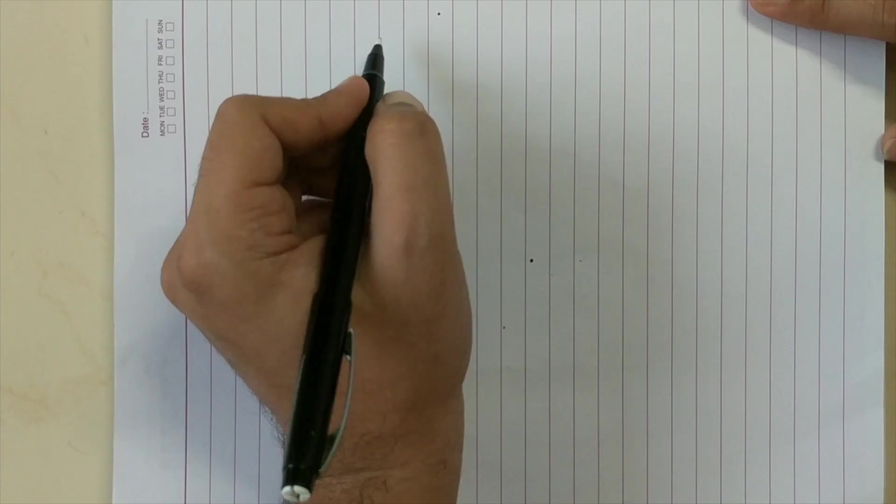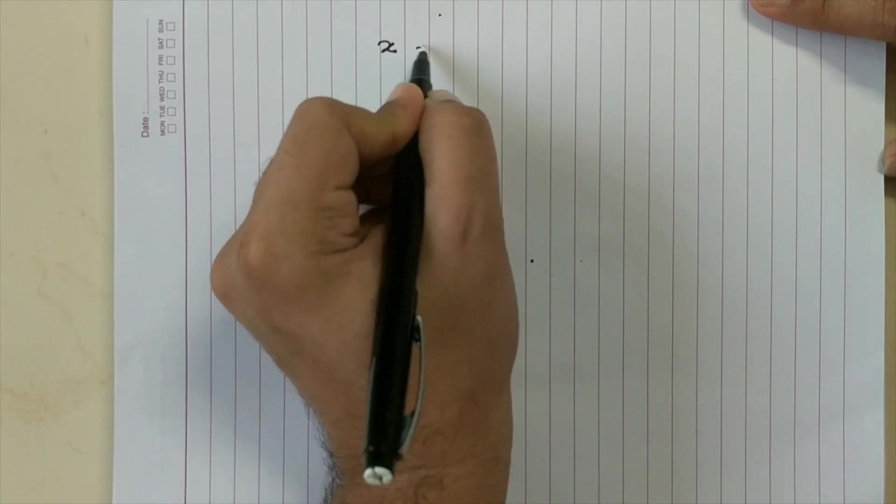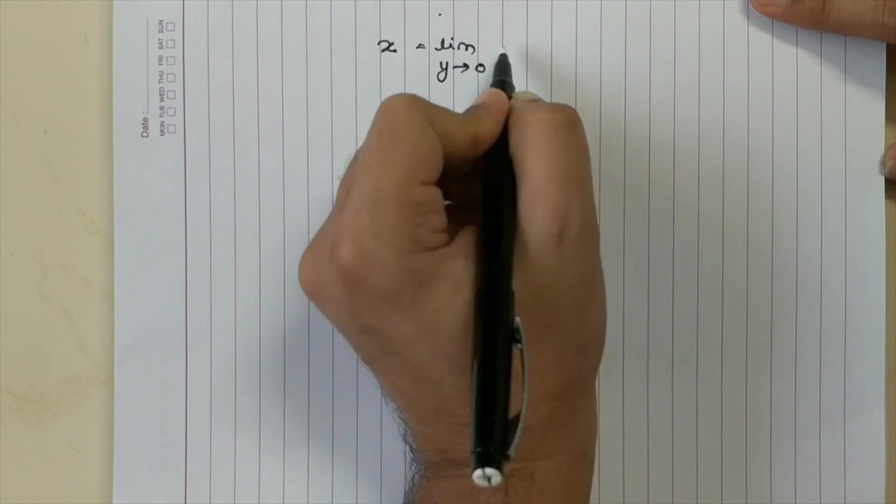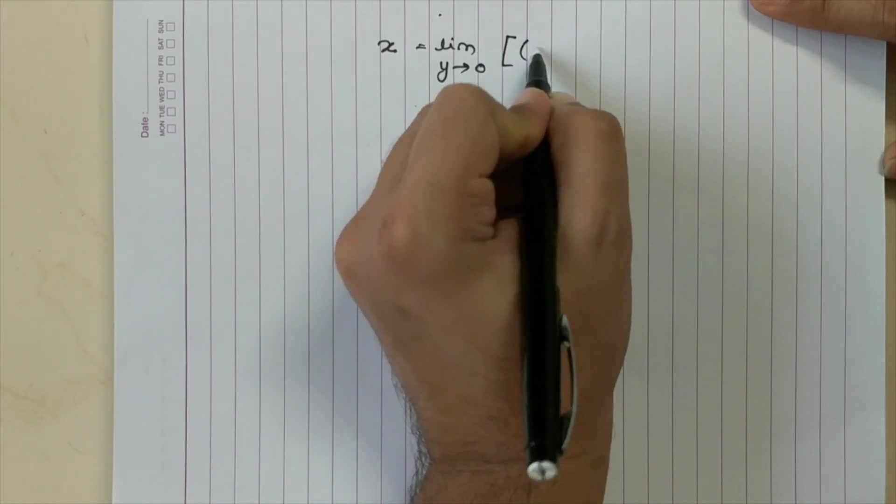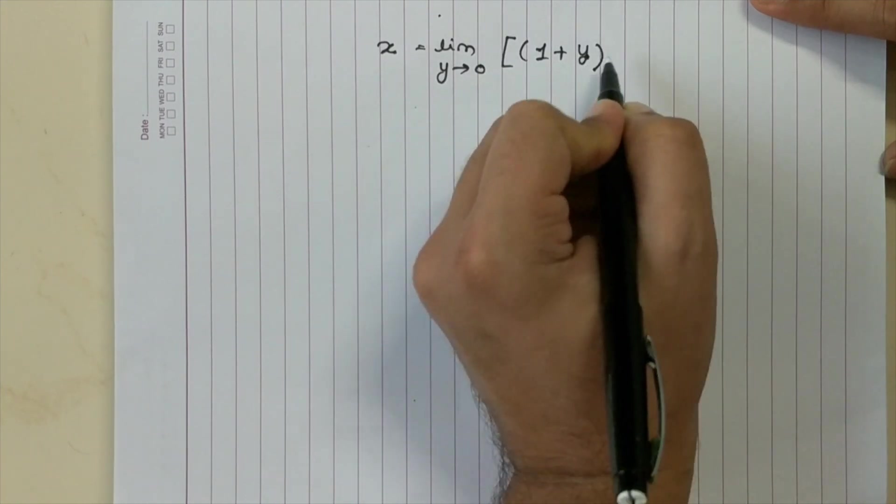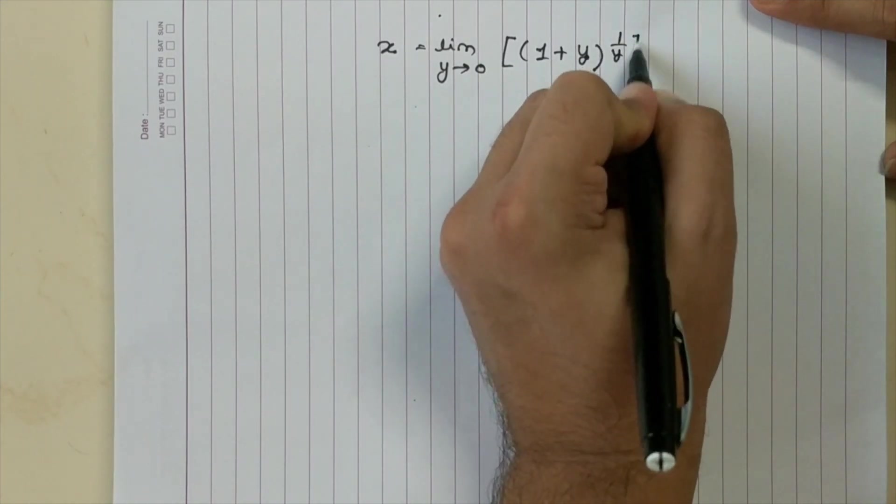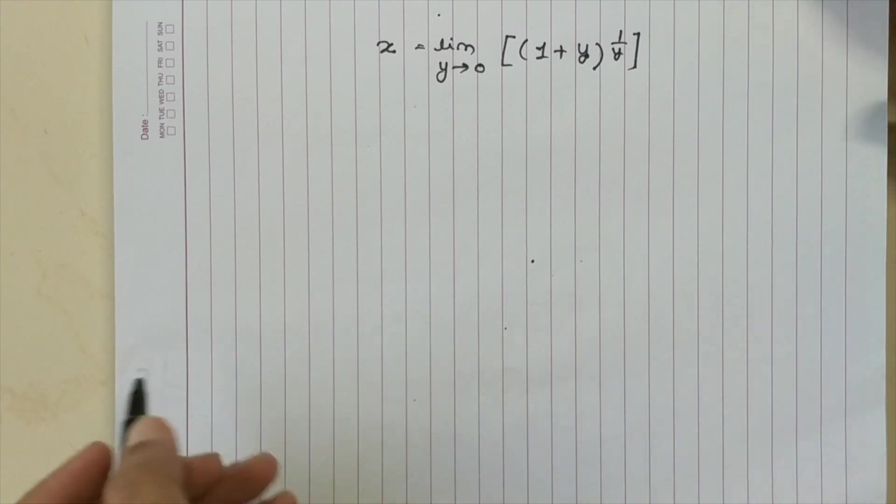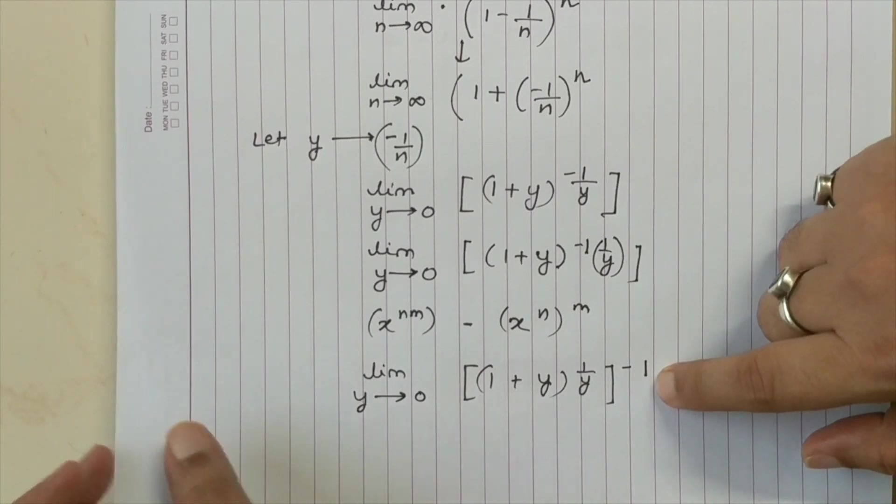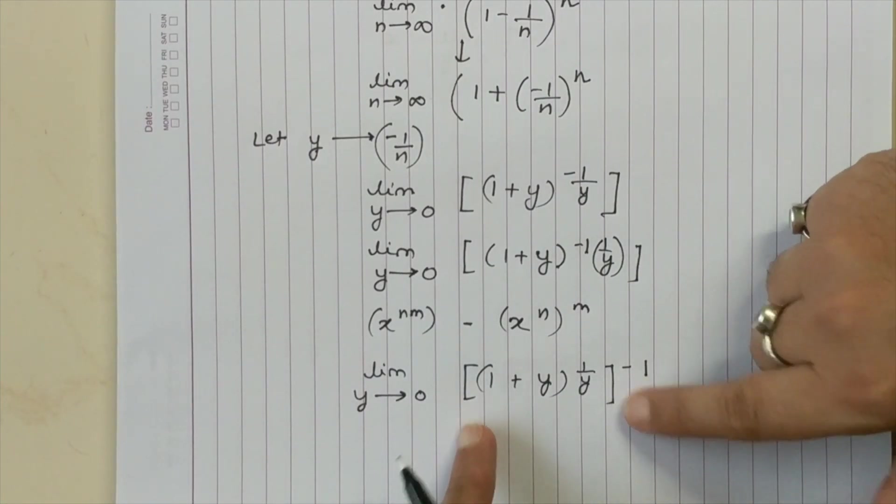The next thing that I will do is I will equate Y to be equal to X. So X is equal to limit Y tending to 0, 1 plus Y upon 1 by Y. I have still kept that minus 1 term as it is. So if you remember, you have minus 1 but I am computing the limit of this inner guy.